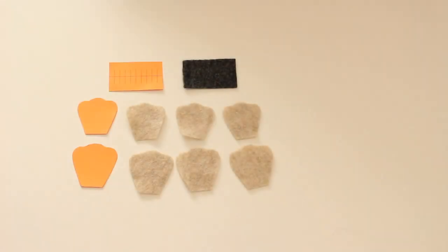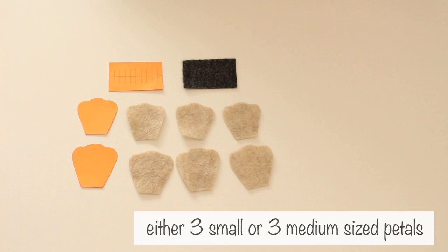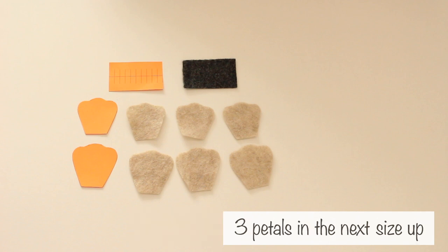For the anemone in the color sandstone, I used the short strip template to cut felt for the center, either 3 small or 3 medium sized petals, and 3 petals in the next size up.